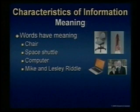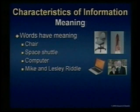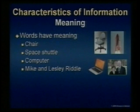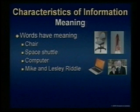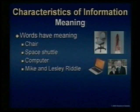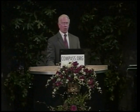A second characteristic of information is something called meaning. Words have meaning, such as the word 'chair' — it is not the physical thing, but it represents something physical, therefore the word 'chair' has meaning. The words 'space shuttle' are not the physical thing, but they represent the physical thing. The word 'computer' is not a physical thing but represents a physical thing. The words Mike and Leslie Riddle are not the physical things, but they represent two physical people. That's what we mean by meaning — the words are not the real thing, but they represent the real thing. Meaning enables communication by associating words, phrases, or symbols to real objects.